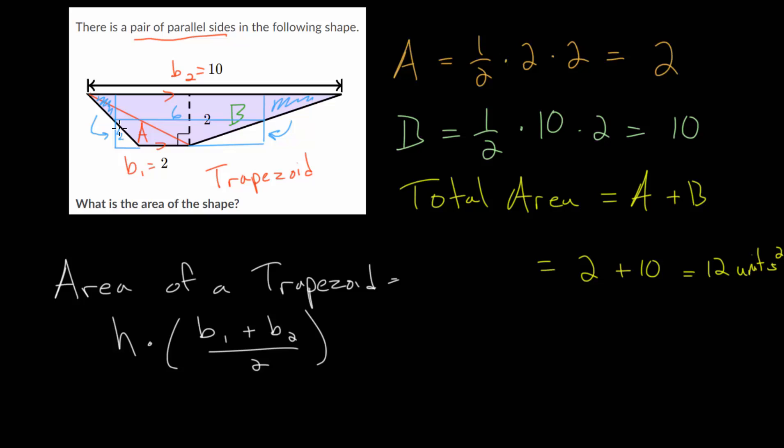So we take this triangle and just rotate it down here. And so now we have a rectangle, where again, the width of this is 6 and the height is 2.